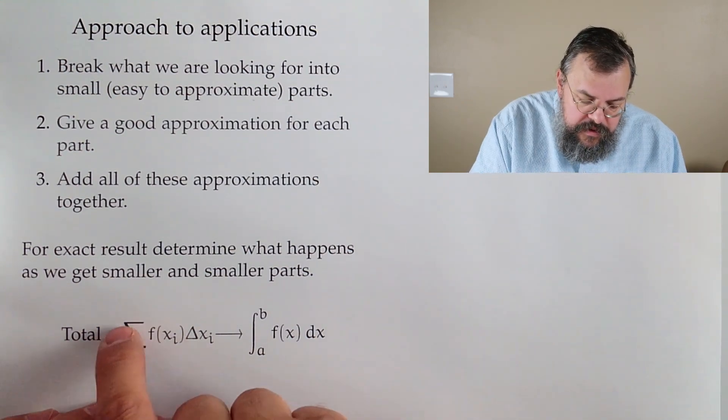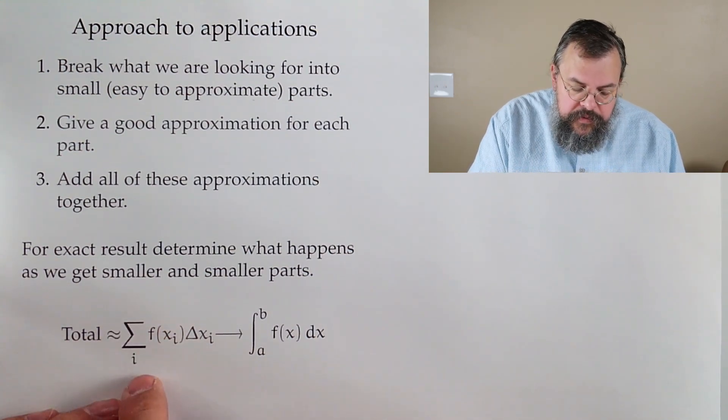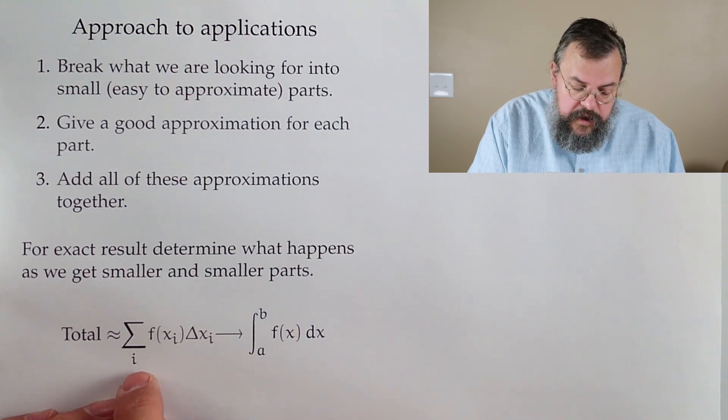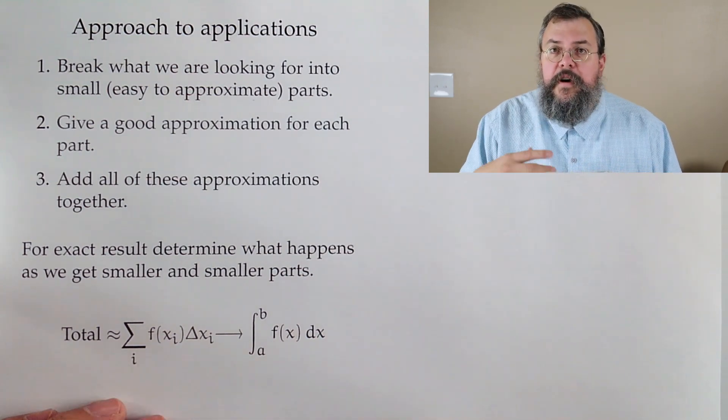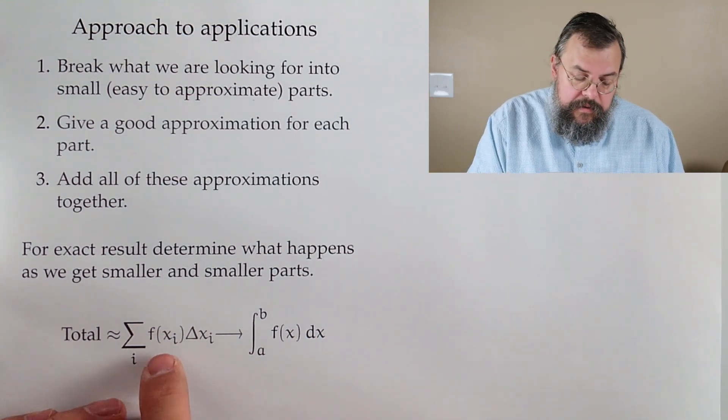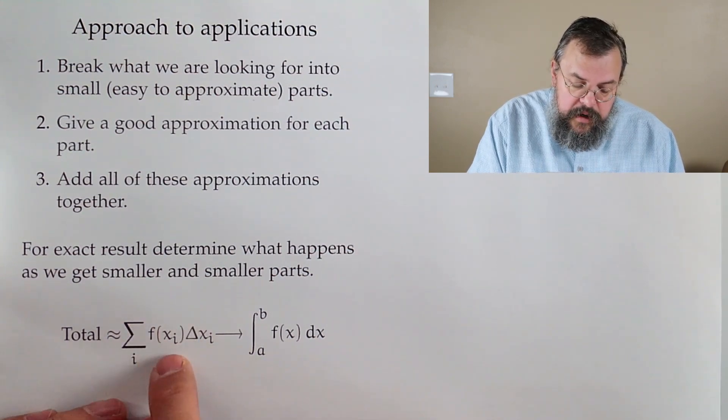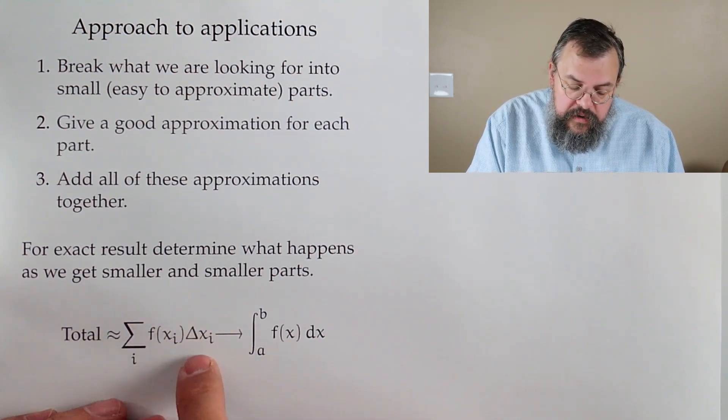So anytime you see something like closer and closer, or smaller and smaller, there's really a limit involved. So in our limit, our sum, that's what's represented here by this sigma sum. Here, this subscript says summing over all our parts, and then we have the contribution from each part.